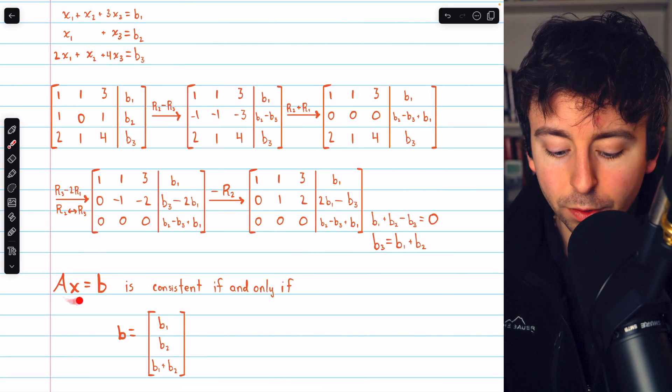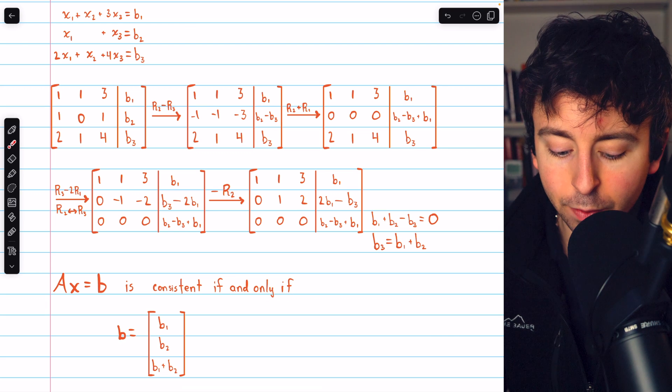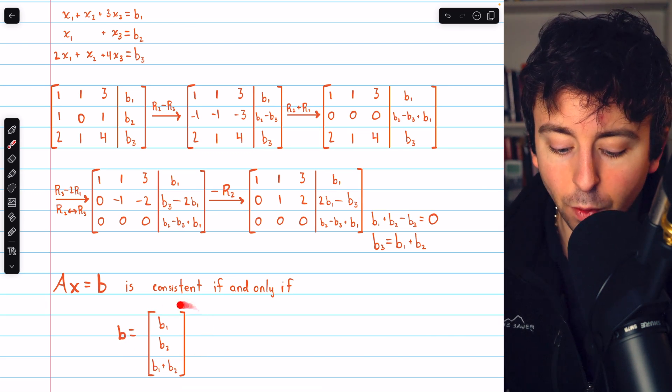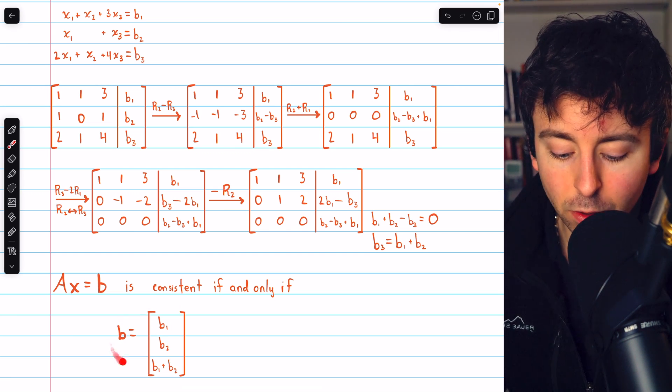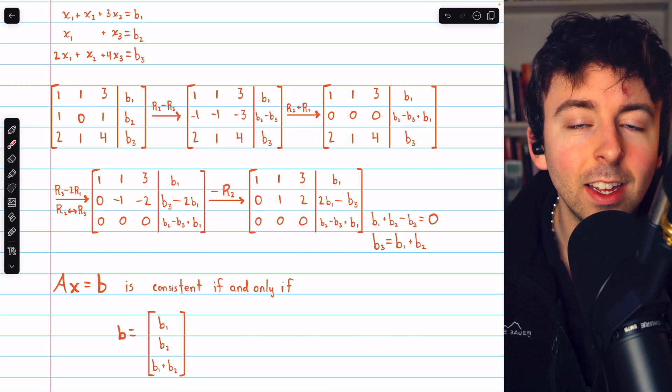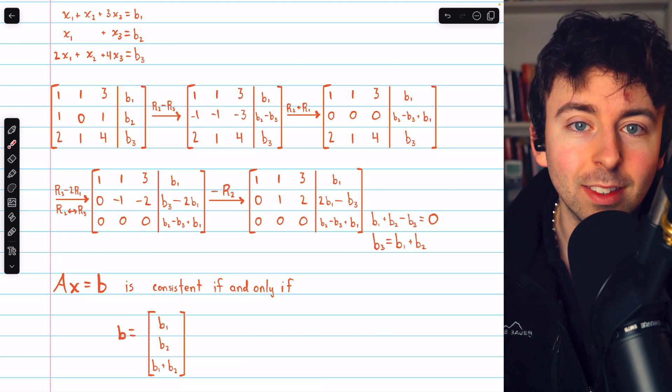Ax equals b will be consistent if and only if b is of this form, so that the third entry is the sum of the first two. As long as b is a vector of this form, then this system will be consistent. Otherwise, it will not be consistent.